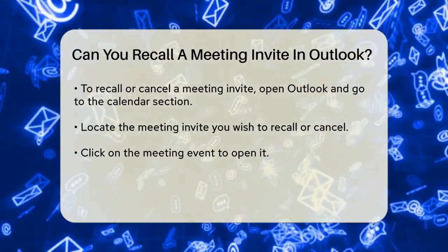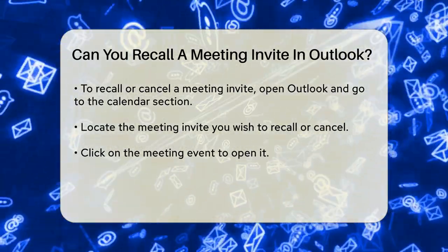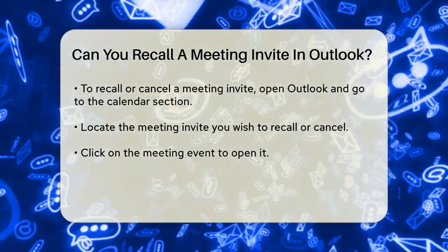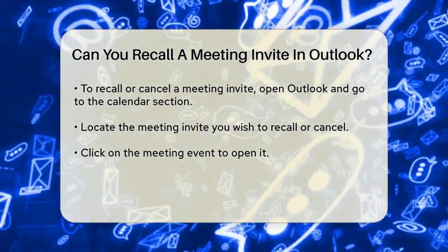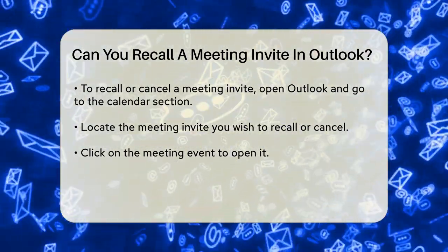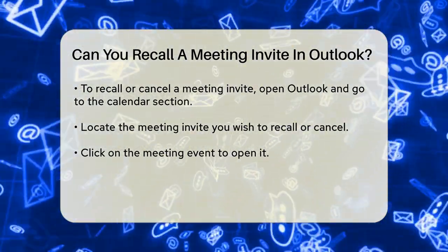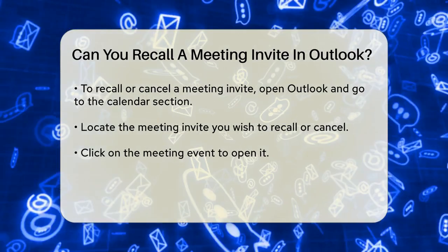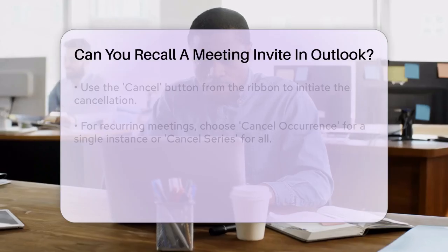Select the Cancel button from the ribbon. If you're canceling a single occurrence of a recurring meeting, you'll see an option to Cancel Occurrence. For canceling the entire series, select Cancel Series.